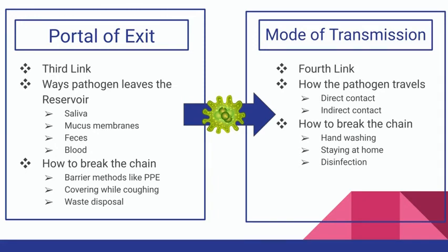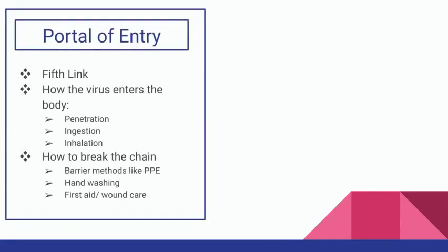Otherwise, the chain continues to the next link, which is the portal of entry, the fifth link. This is how the virus enters the body. This can be done through penetration — for example, broken skin and incisions. It can also be done through ingestion, for example using the same water bottle as someone else. Or it can be done through inhalation, for example inhaling respiratory droplets from the air. To break the chain, barrier methods like PPE, hand hygiene, and first aid and wound care are some things that are effective.